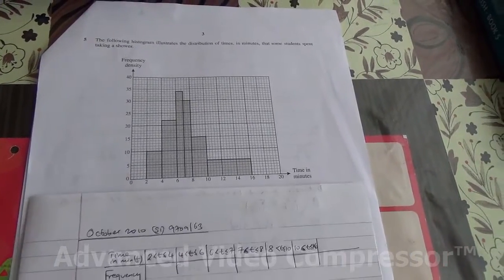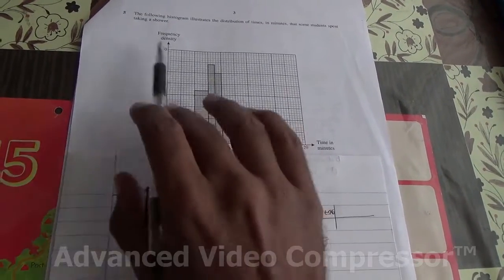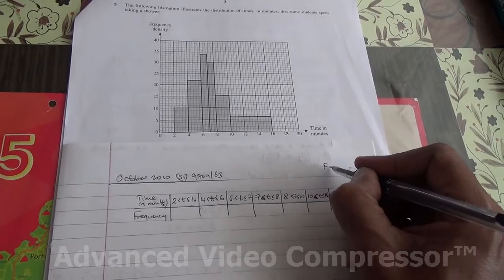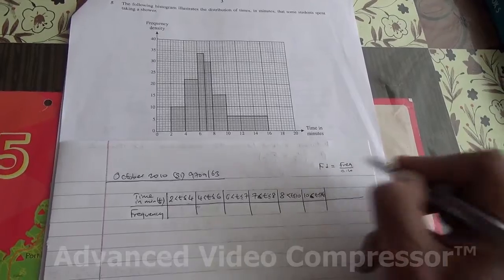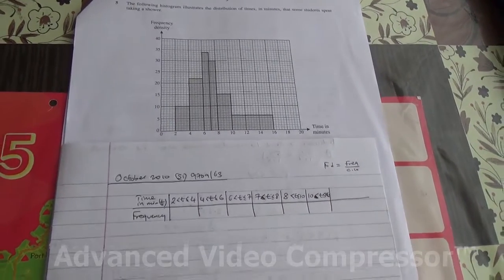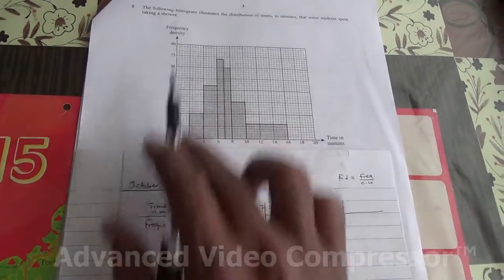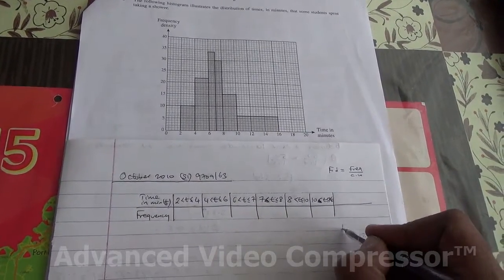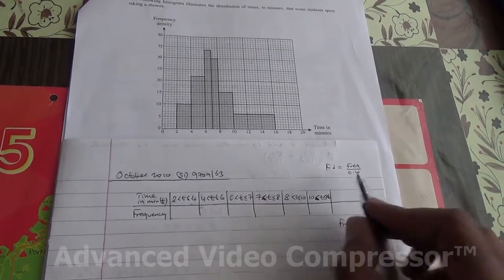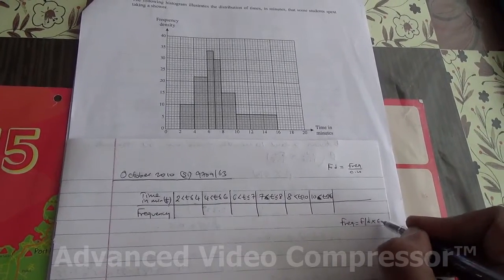First of all, what I'd like to bring to your attention is that if you need to find the frequency density for any histogram, the formula should be frequency density equals frequency divided by class width, or the width of the bars. Now, the frequency density here is 10, so if I need to find the frequency, I can make a new formula here. Frequency equals class width multiplied by frequency density.